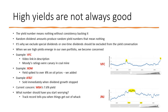When we see high yields start to emerge in our own portfolio, we become quite concerned. A good example is VFC — you can see their yield chart on the right showing that recent spike. Moody's ratings were the canary in the coal mine; they noticed the company was running into problems. We posed the question: buying opportunity or potential danger? We ended up not buying, and when they cut their dividend, we kicked them out. Another example: Exxon's yield spiked over 8% on oil prices, and we actually used that opportunity to add — they've increased their dividend for 47 years in a row. AT&T we sold immediately when their dividend growth stopped. Our current concern is Walgreens Boots with their 7.6% yield — that's a big concern we need to dig into.